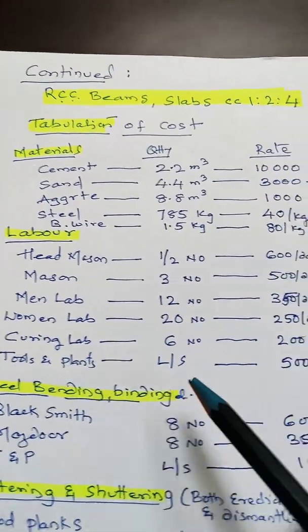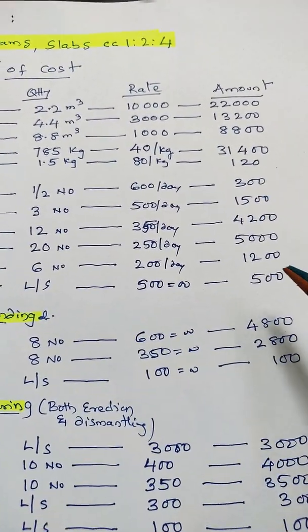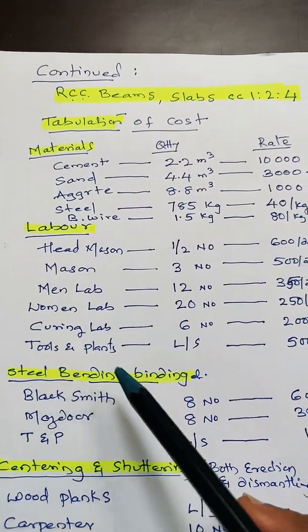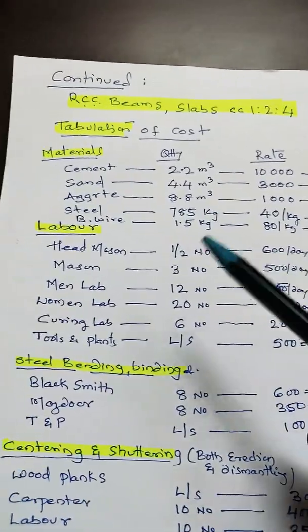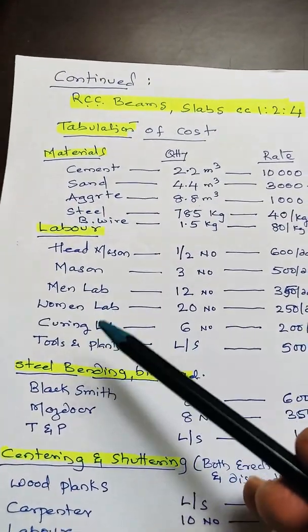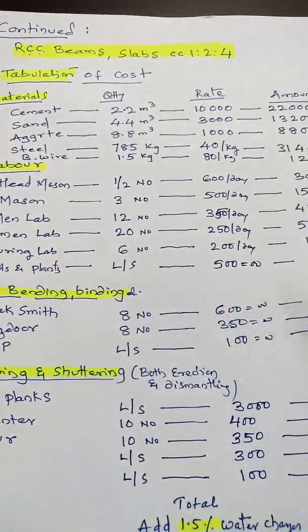Curing person: 6 numbers at 200 per day = 1,200. Tools and plants: taken as lump sum, 500 rupees. This covers labor and tools and plants required.